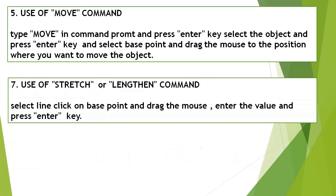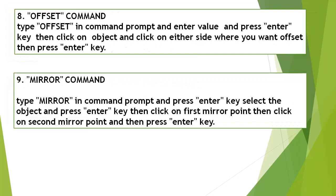Move Command: Type Move in the Command Line Window and press Enter, select the object and press Enter, then select the base point and drag the mouse to the position where you want to move the object. Stretch/Lengthen Command: Select the line, click on the base point, drag the mouse, enter the value and press Enter. Offset Command: Type Offset in the Command Line Window, enter the value and press Enter, then click on the object and click on the side where you want the offset, then press Enter.